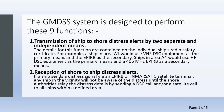Function 1: Transmission of ship-to-shore distress alert by two separate and independent means. The details for this function are contained on the individual ship's radio safety certificate. For example, a ship in area A1 would use the VHF/DSC equipment as the primary means and the EPIRB as the secondary. Ships in area A4 would use VHF/DSC equipment as the primary means and 406 MHz EPIRB as the secondary means.